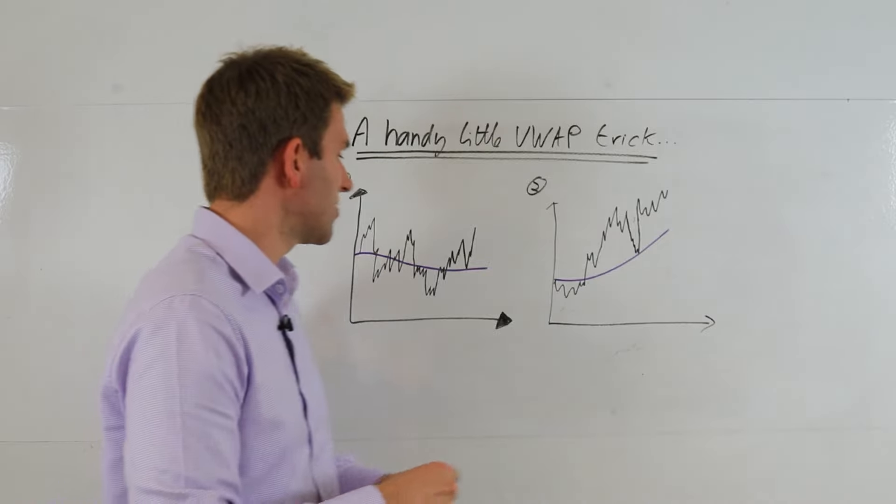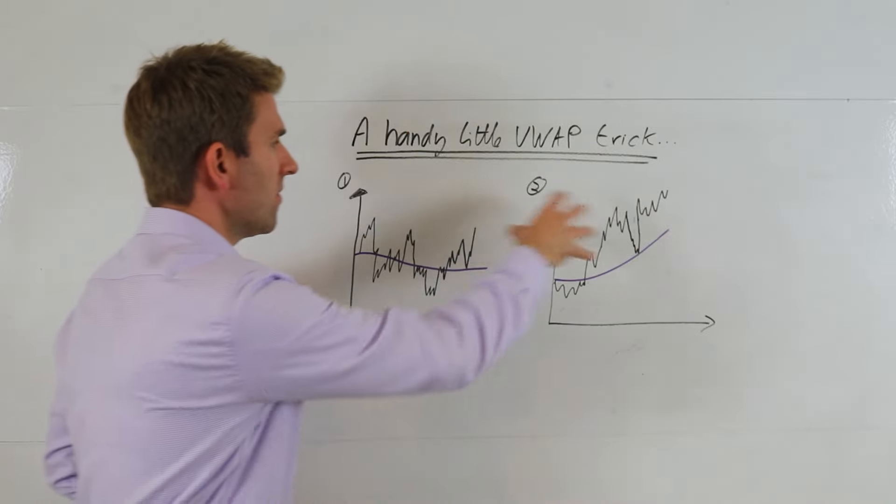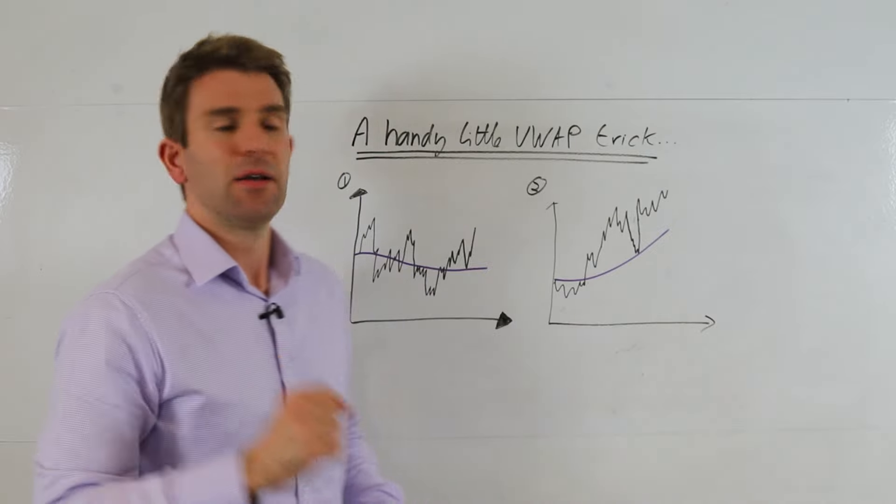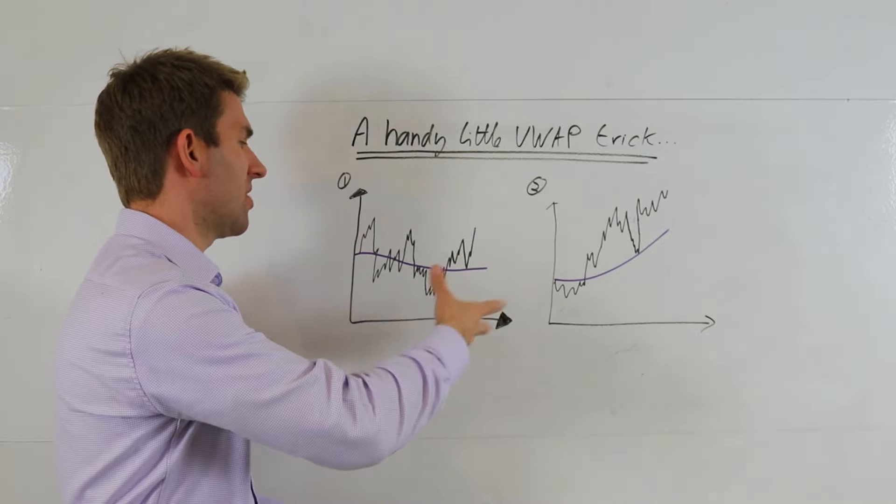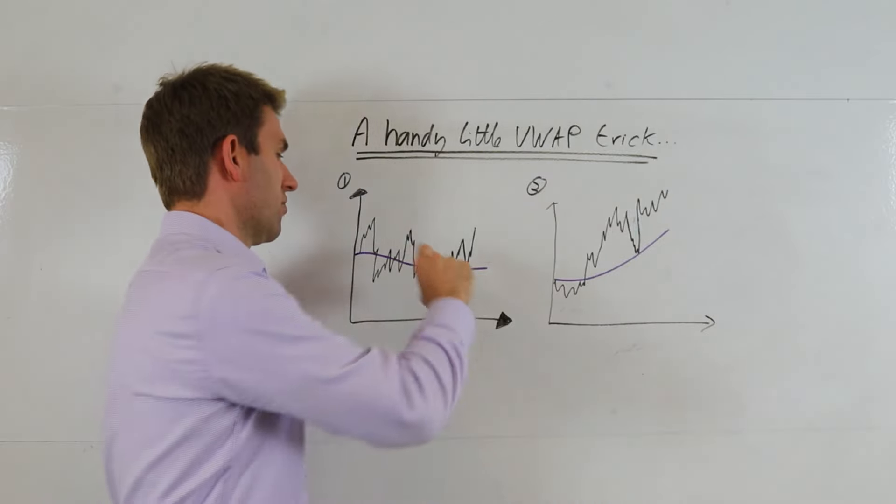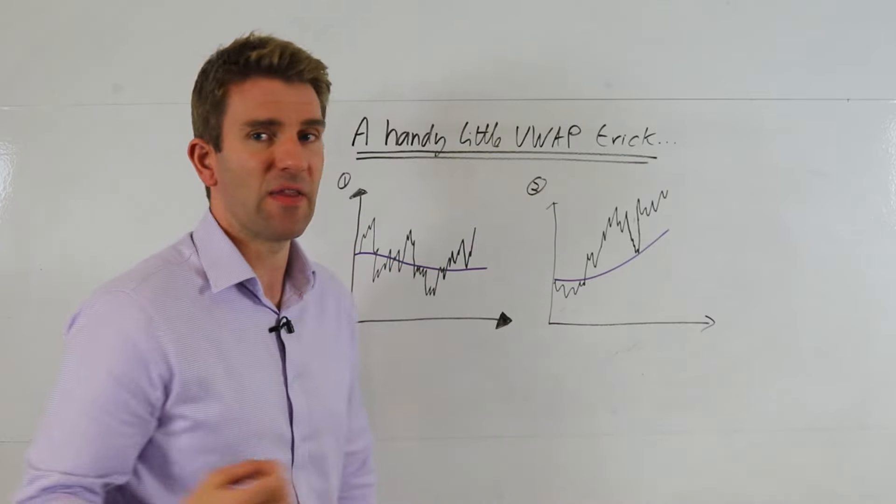Purple line is VWAP, price versus the black line. You might say this is a range and it's nice to trade. There's definitely something to be said for using this method we talked about before—distance away from VWAP, extrapolating and trading like that. If you're that type of trader, fine.